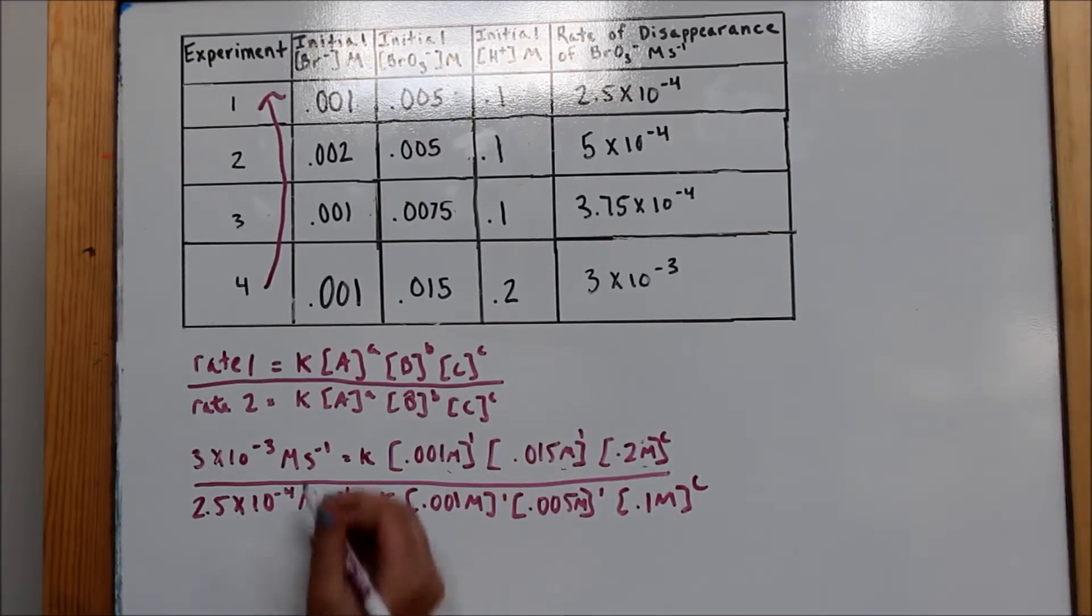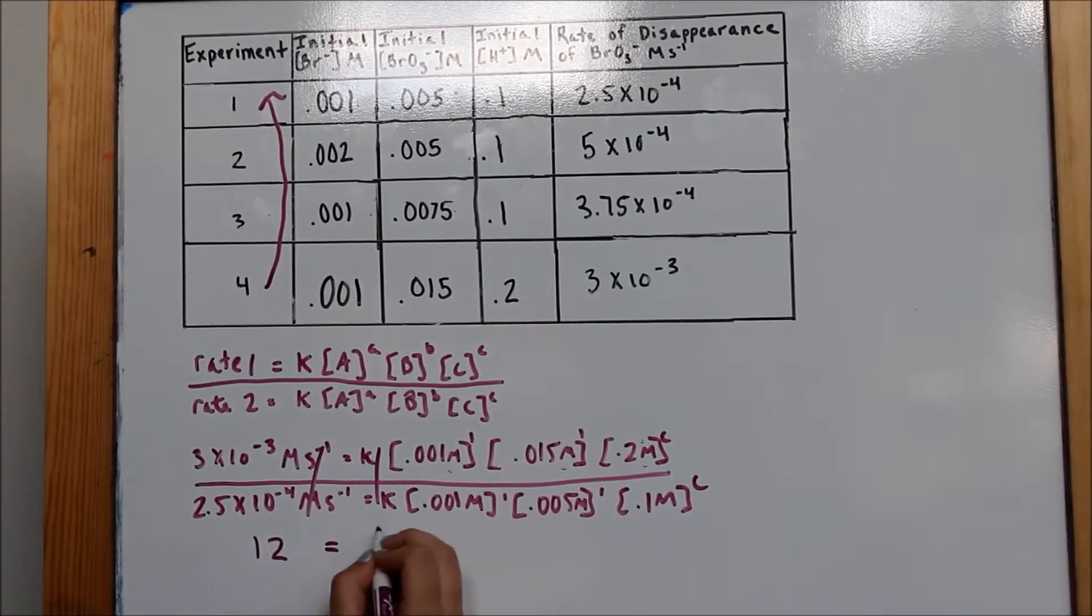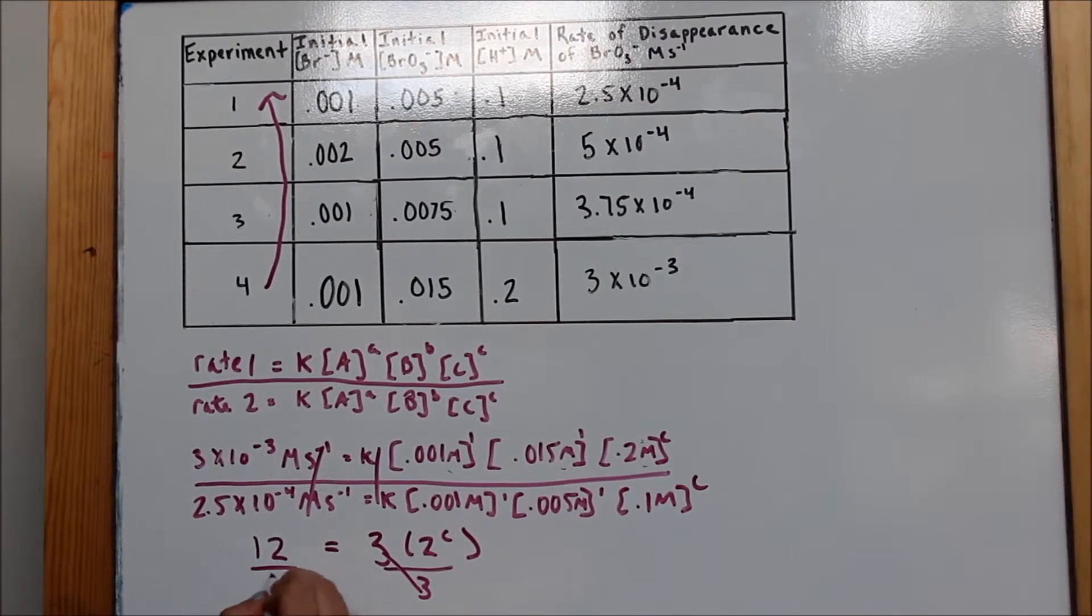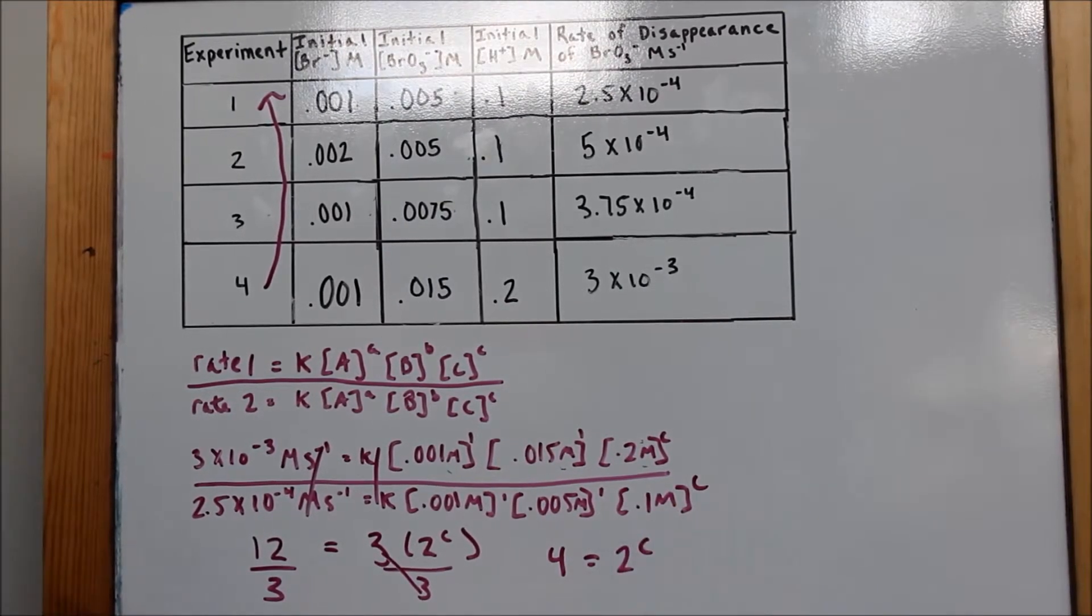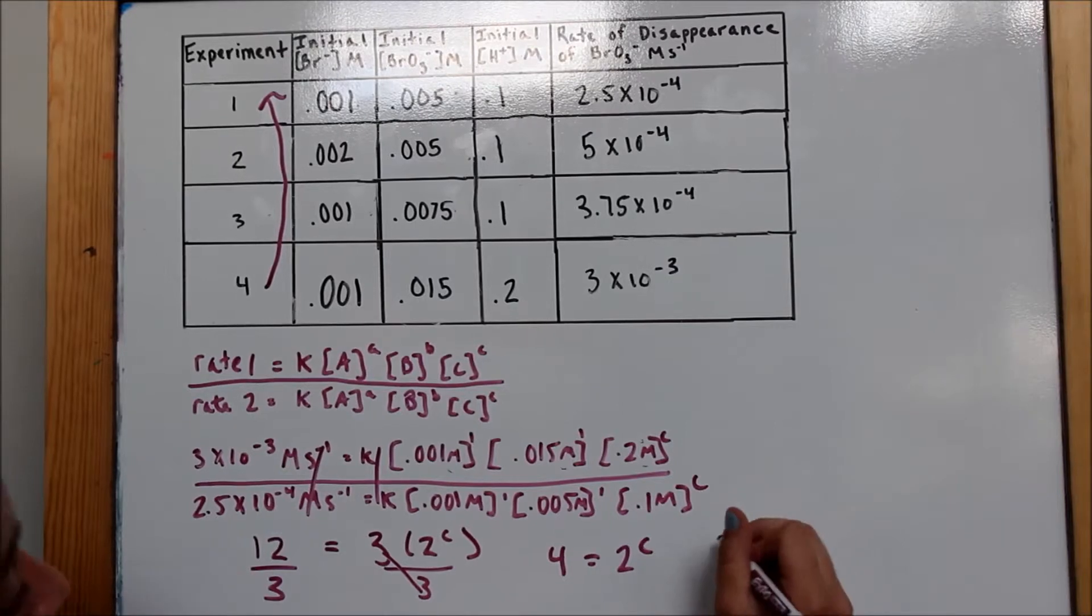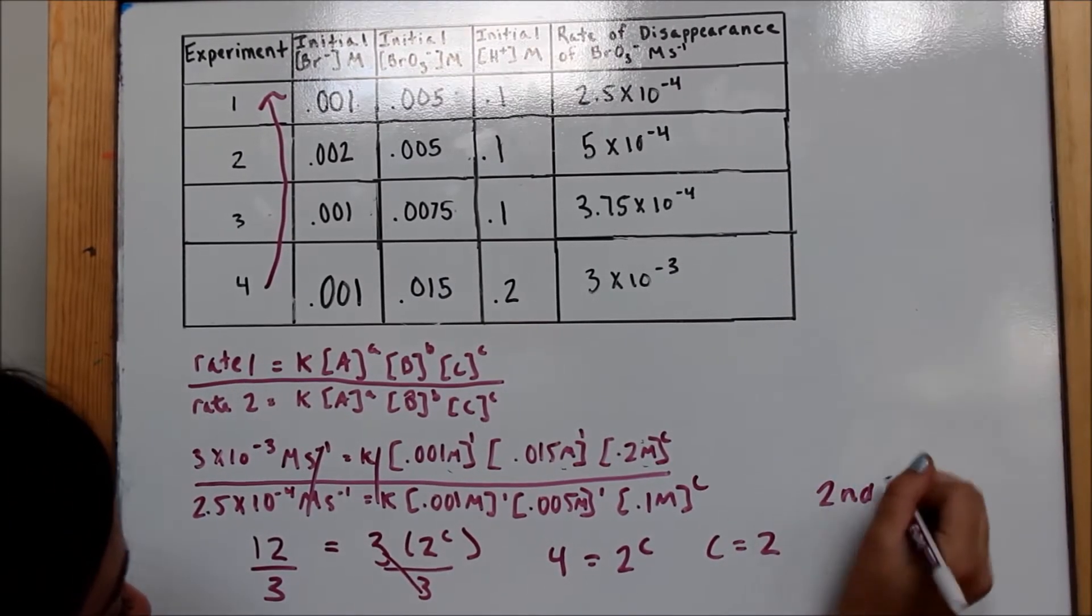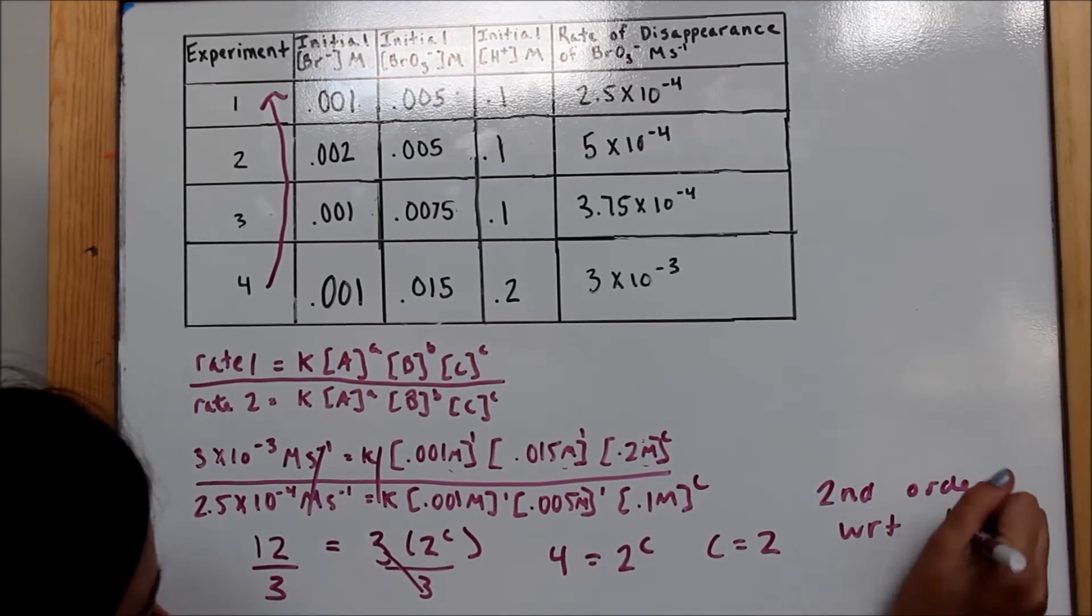Now, we can cancel out units and constants, and divide. It simplifies to 12 equals 3 times 2 to the C. We will divide both sides by 3, and come up with 4 equals 2 to the C. In solving this equation, we see that C equals 2, meaning it is second order with respect to H+.